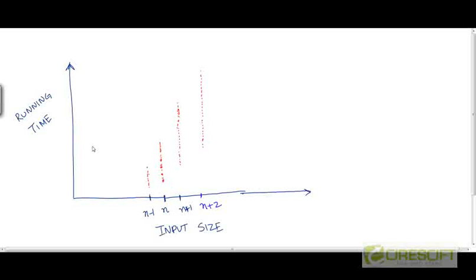Consider this plot of running time vs input size. Running time is a function of input size. On the x-axis we have the input size, which varies and starts from 1. Input sizes are of course integers, so we start from the smallest input of size 1 and go all the way up to infinity. What I have shown here are values of running times for 4 different input sizes.